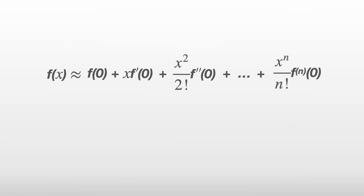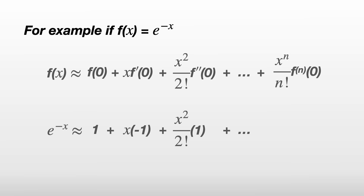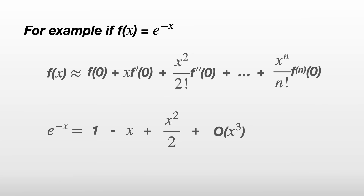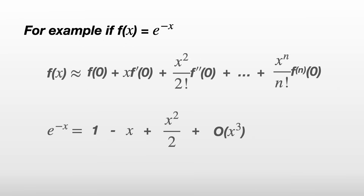For example, if f of x is equal to e to the minus x, then the Taylor series is 1 plus x times the derivative of e to the minus x at x equals 0, which is minus 1, and so on. The second order Taylor series includes terms up to x squared and is 1 minus x plus x squared over 2, with a big O of x cubed term indicating error from not including terms of x cubed and above.